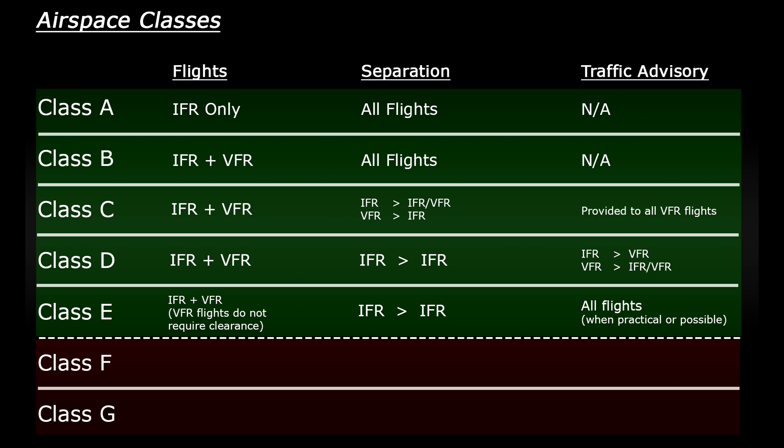The subtle differences between classes C, D, and E can be confusing — I struggled to get my head around it myself. But you can see there's almost a rank of importance within these classes: class A being the most important where air traffic controllers are kept very busy, and class E where the rules and regulations are more relaxed.